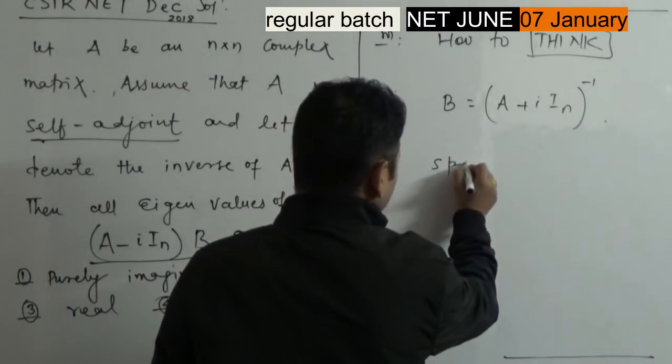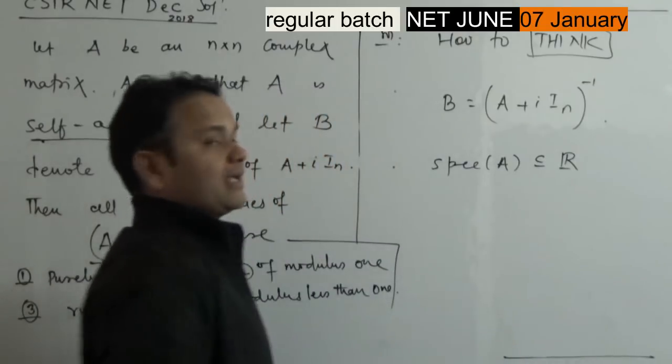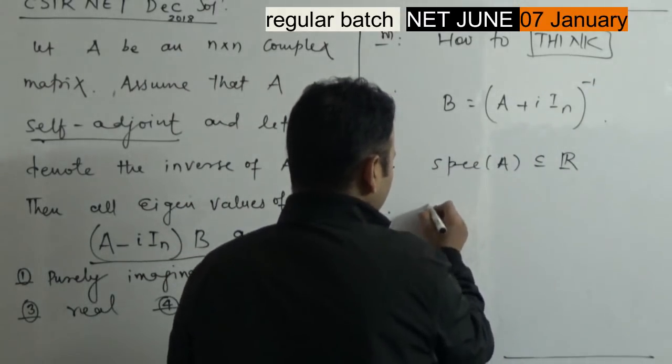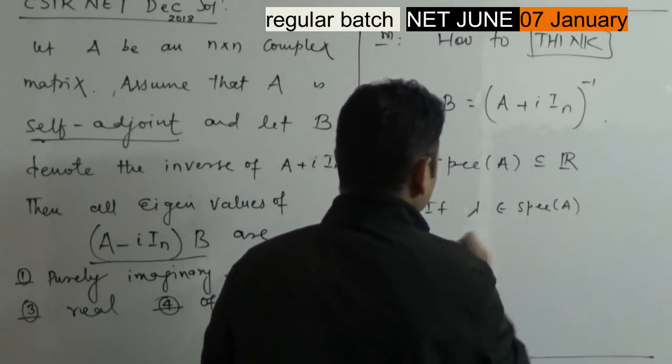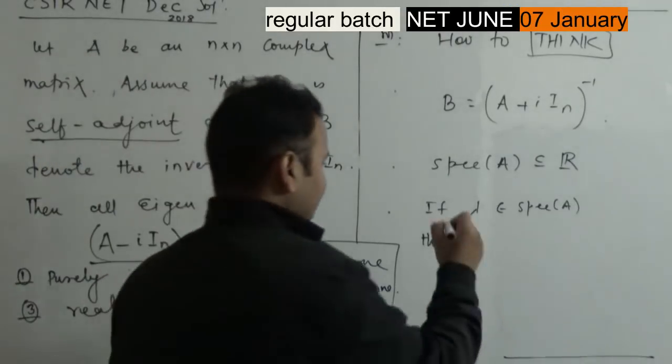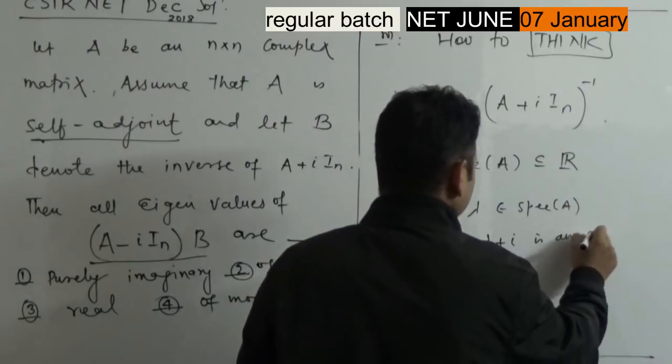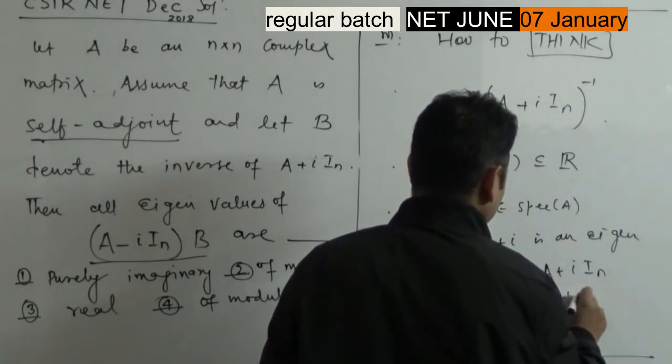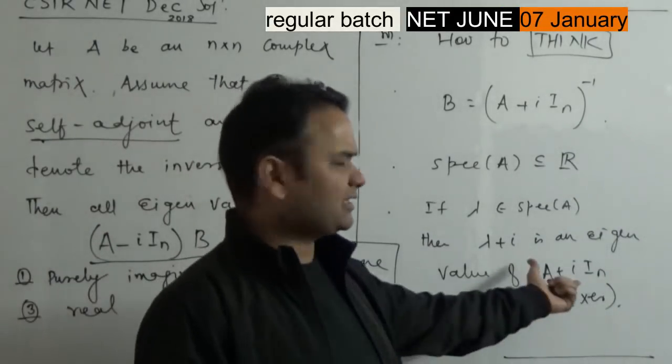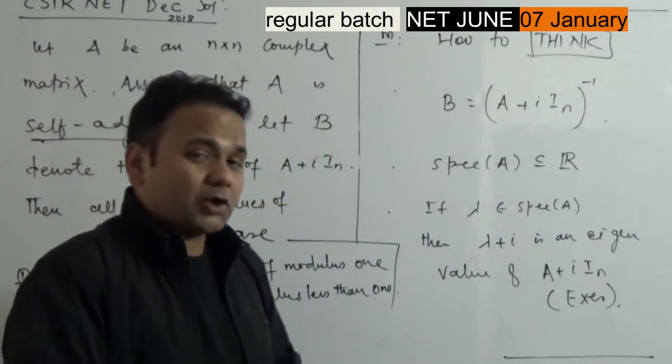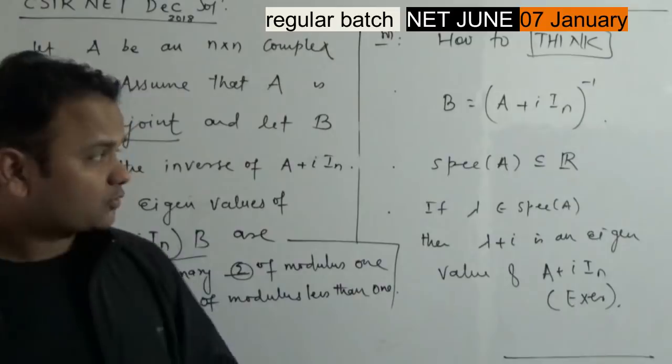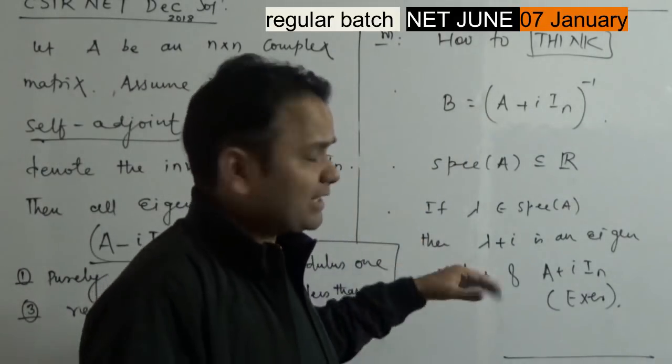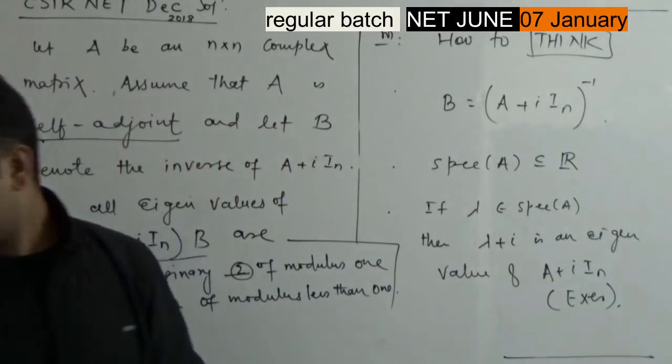If A is self-adjoint, we know the eigenvalues are real numbers. If lambda belongs to spectrum of A, then if lambda is an eigenvalue of A, then lambda minus i is an eigenvalue of A minus iI_n, and lambda plus i is an eigenvalue of A plus iI_n. This is an exercise. Think about it. It is very easy. You can easily prove it. If you know the eigenvalue of A, then you can know all eigenvalues of polynomials in A. That is a theory and you should know that.